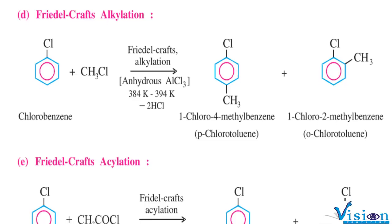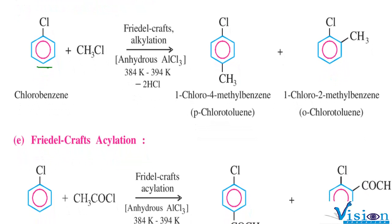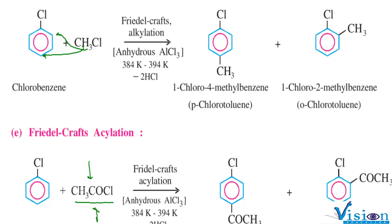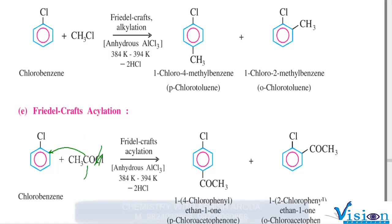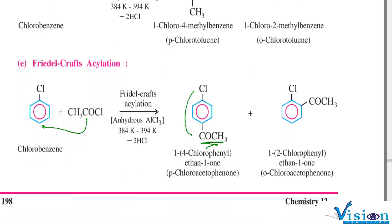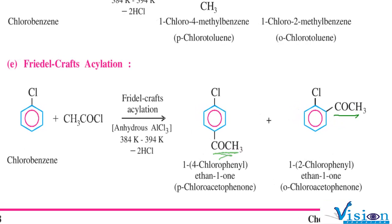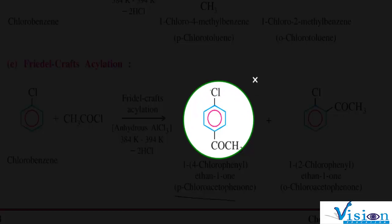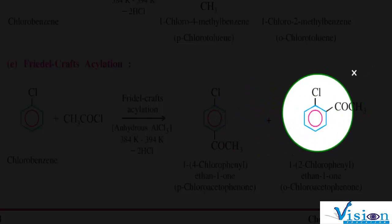For Friedel-Crafts acylation, reacting chlorobenzene with acetyl chloride (CH₃COCl) in the presence of anhydrous AlCl₃: the chlorine leaves and a COCH₃ group attaches at the ortho and para positions, giving para-chloroacetophenone and ortho-chloroacetophenone.